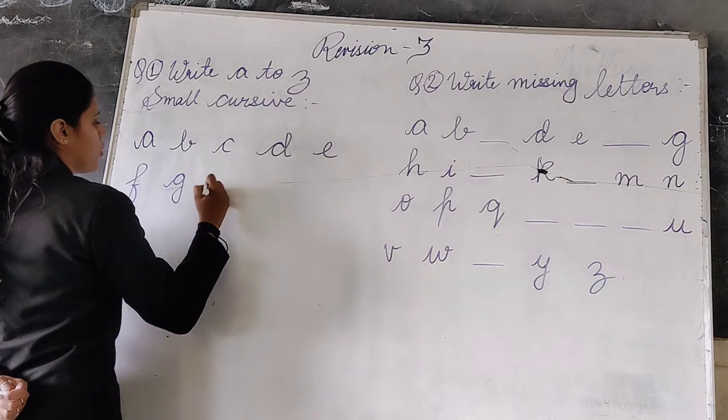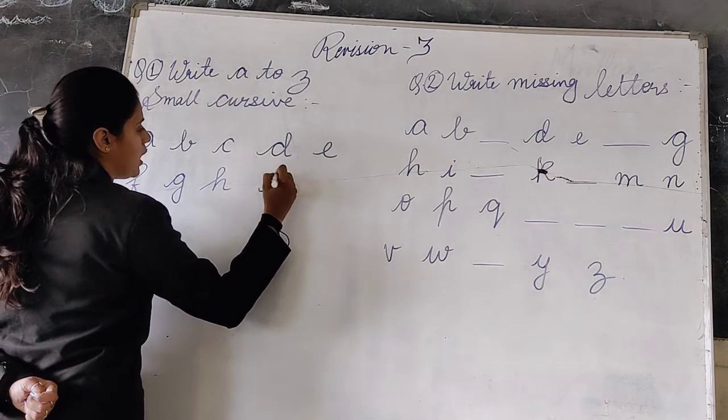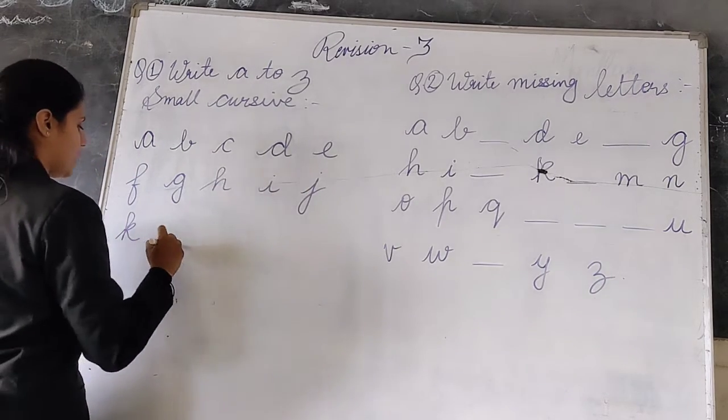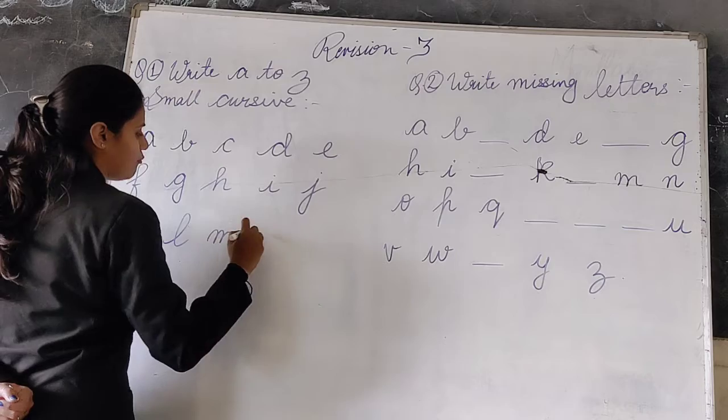F for fish, G for grass, H for hand, I for ice cream, J for joker, K for kite, L for lion, M for monkey.